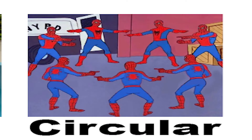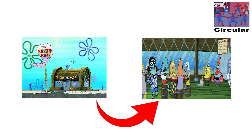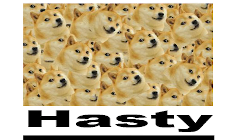Circular reasoning. In circular reasoning, the conclusion is assumed within the premise, essentially arguing in a circle. For example, why is this restaurant the best in town? Because everyone says it's the best. And why does everyone say it's the best? Because it's the best restaurant in town.